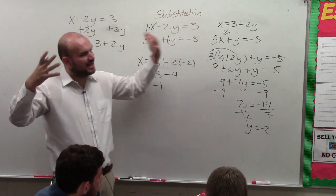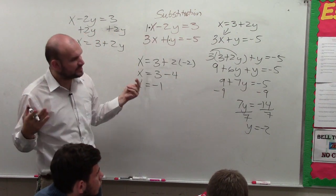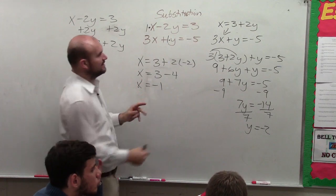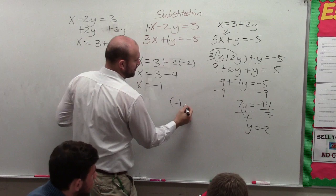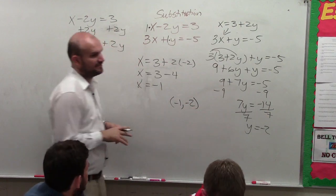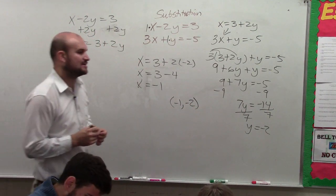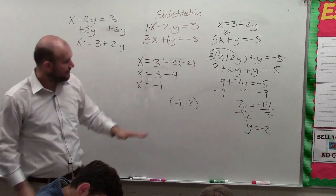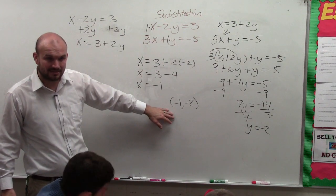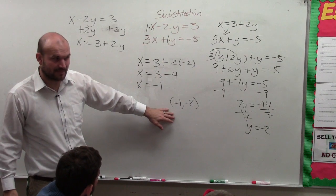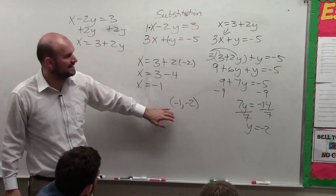So now, if you were to visualize the graphs, you don't even need to know what the graphs look like. But you know that these two, if you graph them, would intersect at the coordinate point negative 1, negative 2. And then also, going back to, Marissa, our solutions, the sense this has an intersection point, this is a consistent system that is independent. OK?